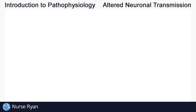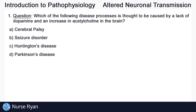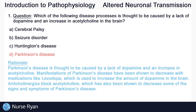Starting off with question number one: which of the following disease processes is thought to be caused by a lack of dopamine and an increase in acetylcholine in the brain? I'll leave a bit of a break where you can pause the video and think about the answer. The answer here is D, Parkinson's disease. Parkinson's disease is thought to be caused by a lack of dopamine and an increase in acetylcholine.